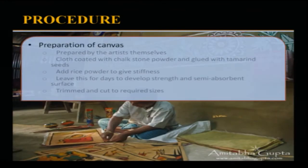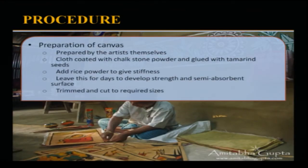The canvas is prepared by the artists themselves. The cloth, usually made of tassar silk, is coated with soft, fine, white chalked stone powder and glued with a glue made from tamarind seeds; sometimes rice powder is added to give stiffness. This preparatory work is quite arduous and is left for days to develop tensile strength and a semi-absorbent surface. Then the cloth is trimmed from the sides and cut to the required sizes.